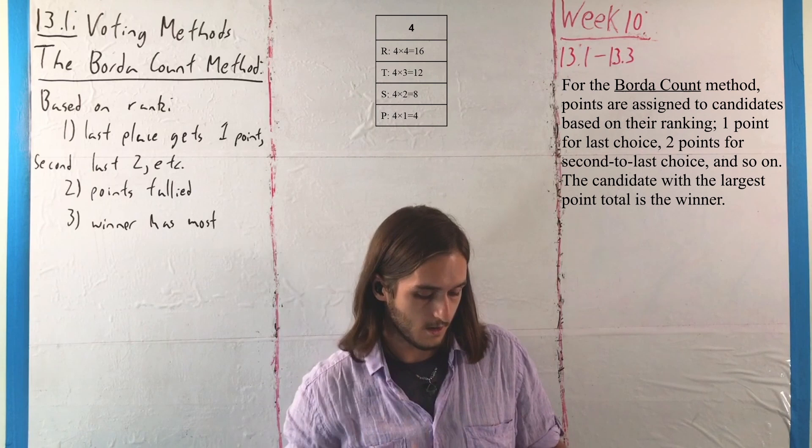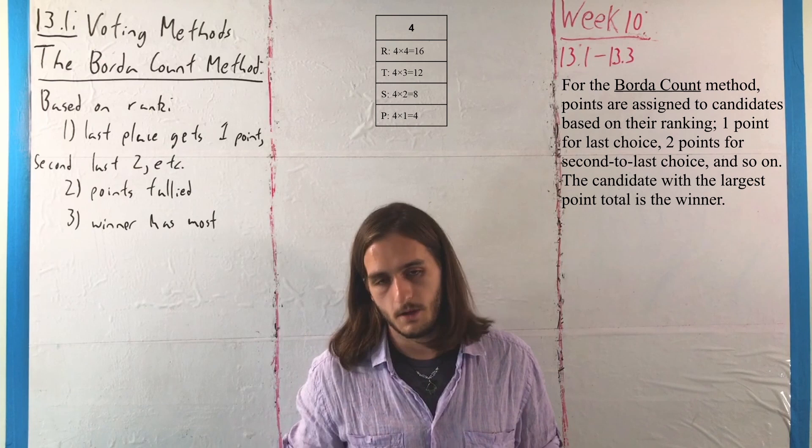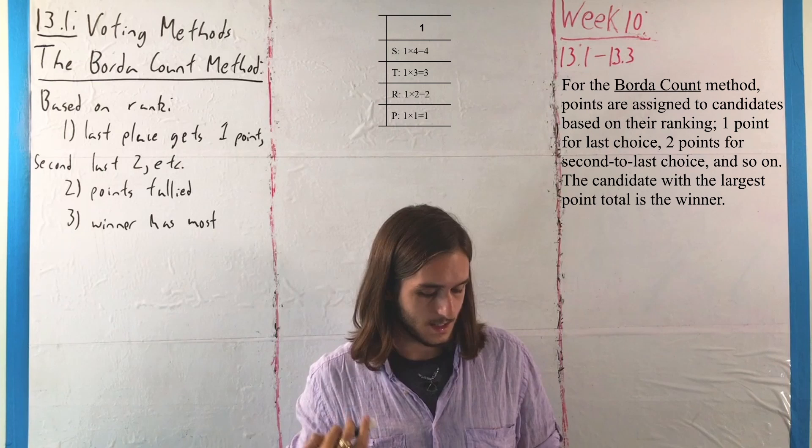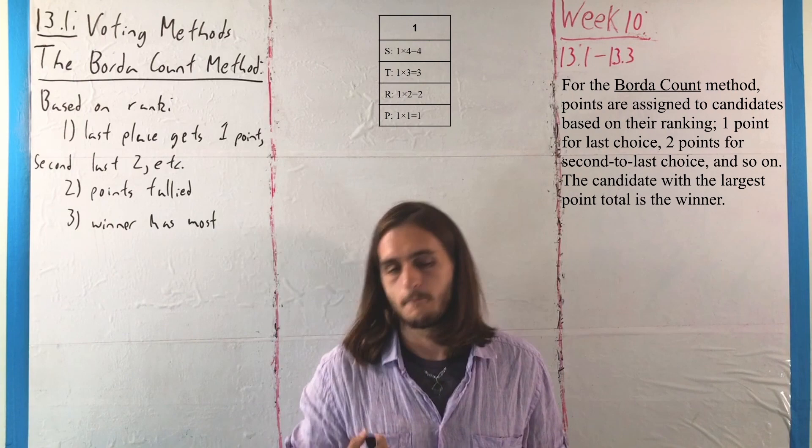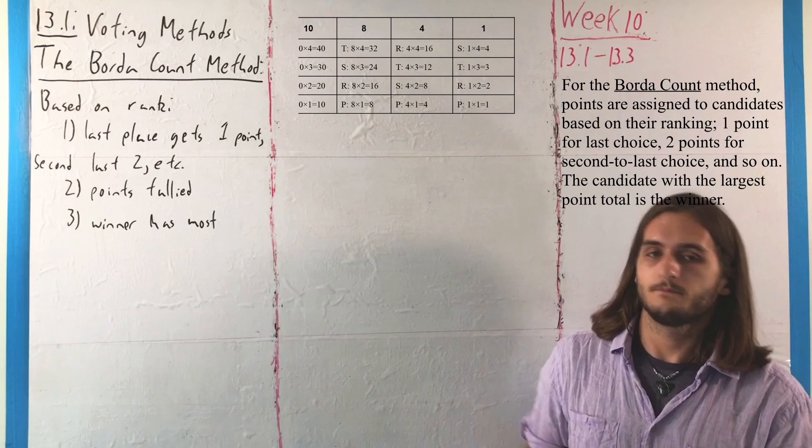For the 4 ballots ordered Rome, Tallinn, St. Petersburg, Paris — that's 4 × 4 = 16 for Rome, 3 × 4 = 12 for Tallinn, 2 × 4 = 8 for St. Petersburg, and 1 × 4 = 4 for Paris. And finally, for that single person who really wants to go to Russia: 4 for St. Petersburg, 3 for Tallinn, 2 for Rome, and 1 for Paris.